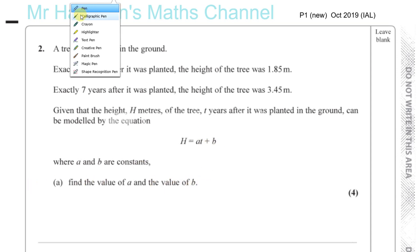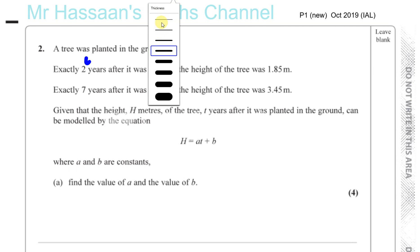So basically they've given us a pair of simultaneous equations in a roundabout worded problem. What we know is that two years is the value of t, and H is the height of the tree. So this is t and this is H.